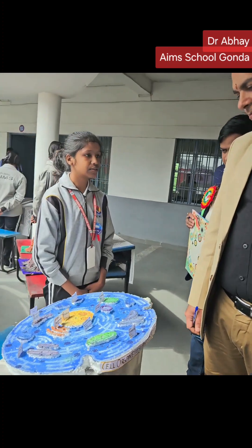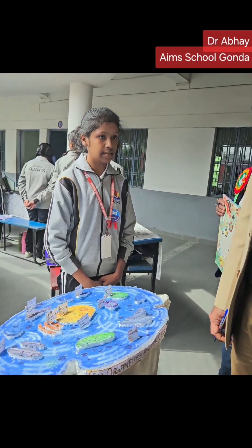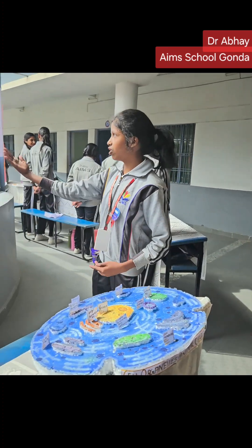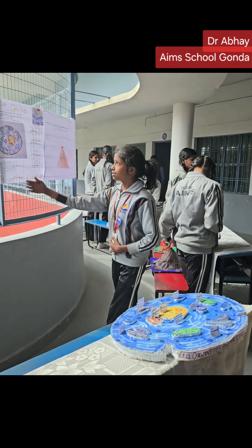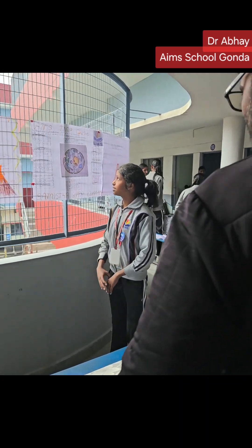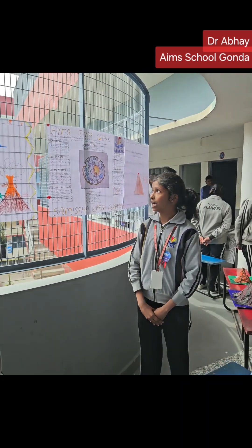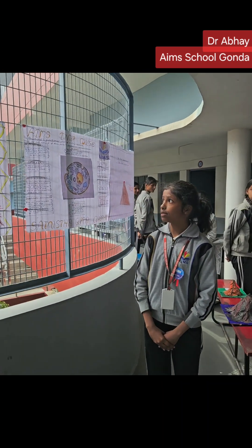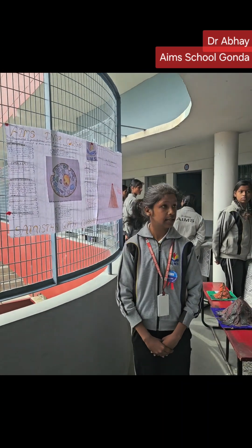Thank you sir for the time. The functional and structural unit is known as the cell. Look at this chart. This is the cell membrane — the cell membrane or the plasma membrane is the boundary of the cell.